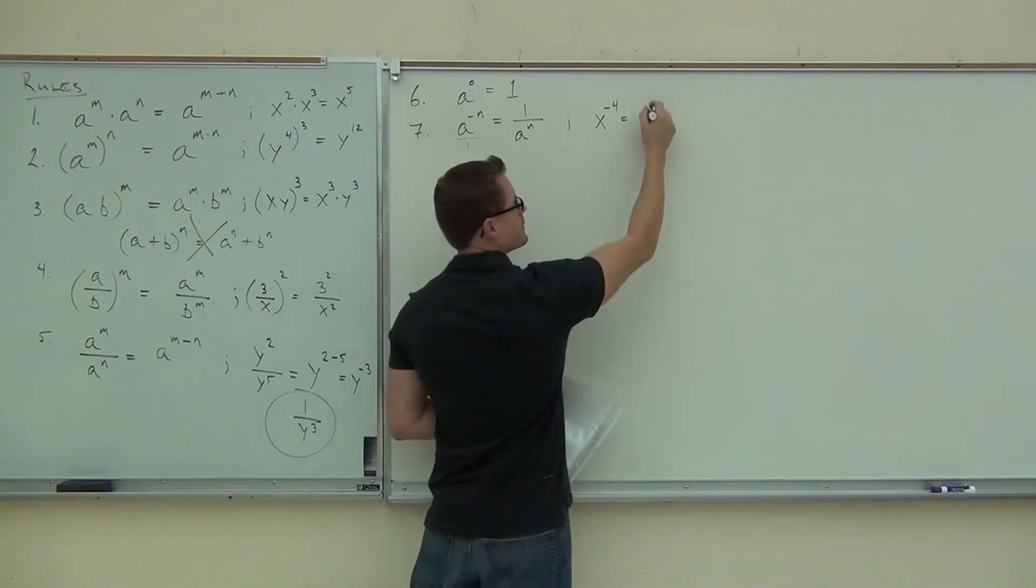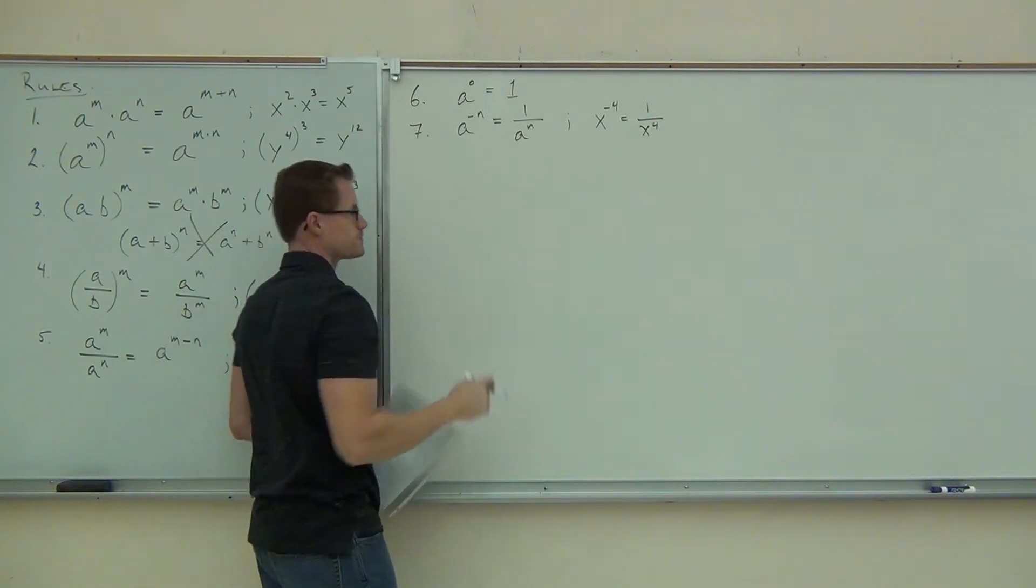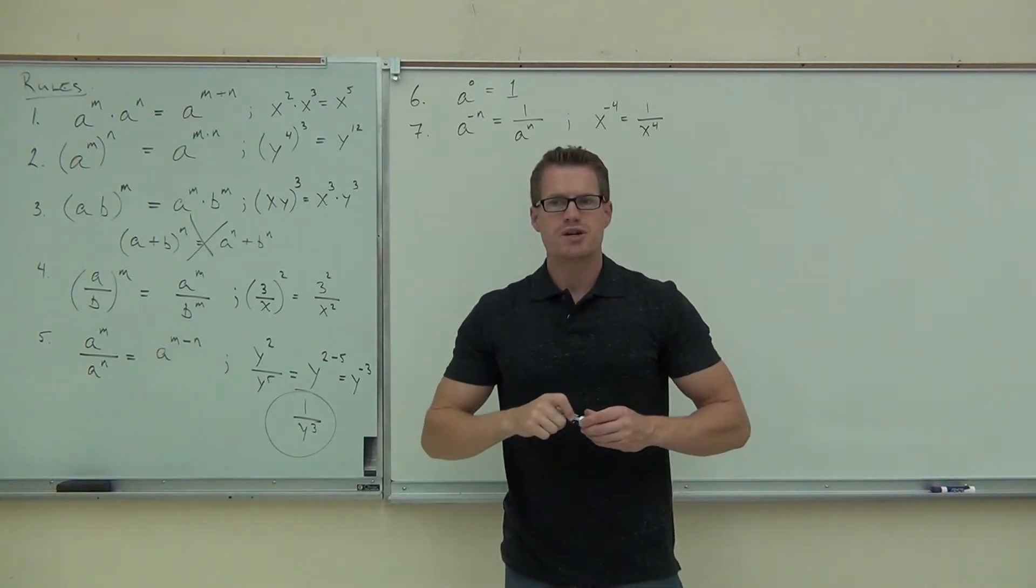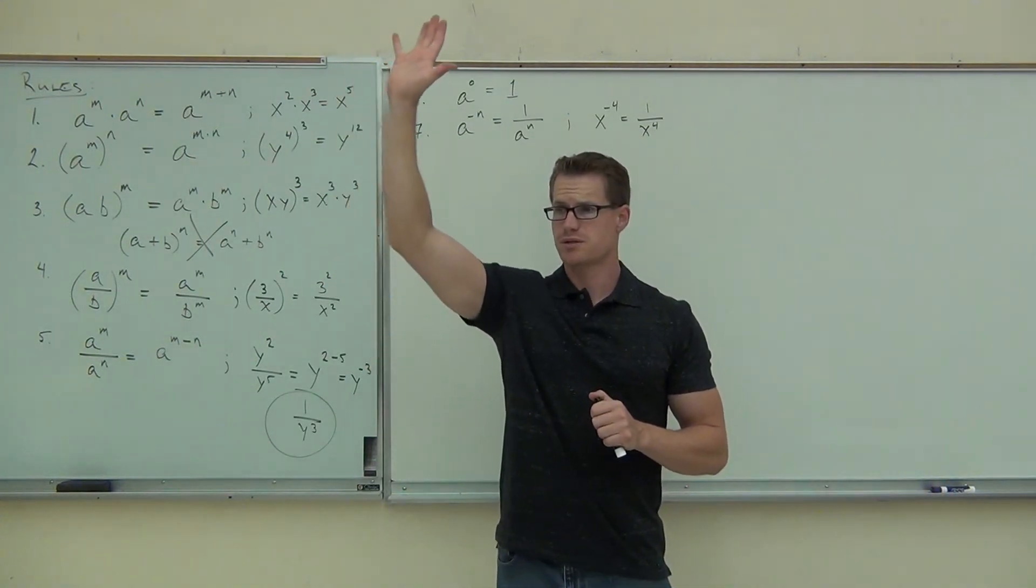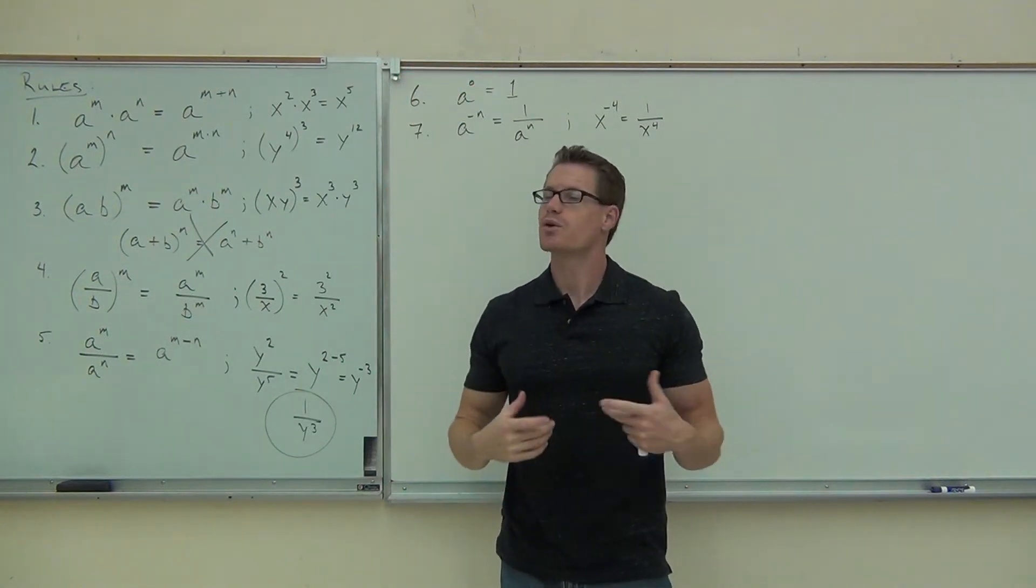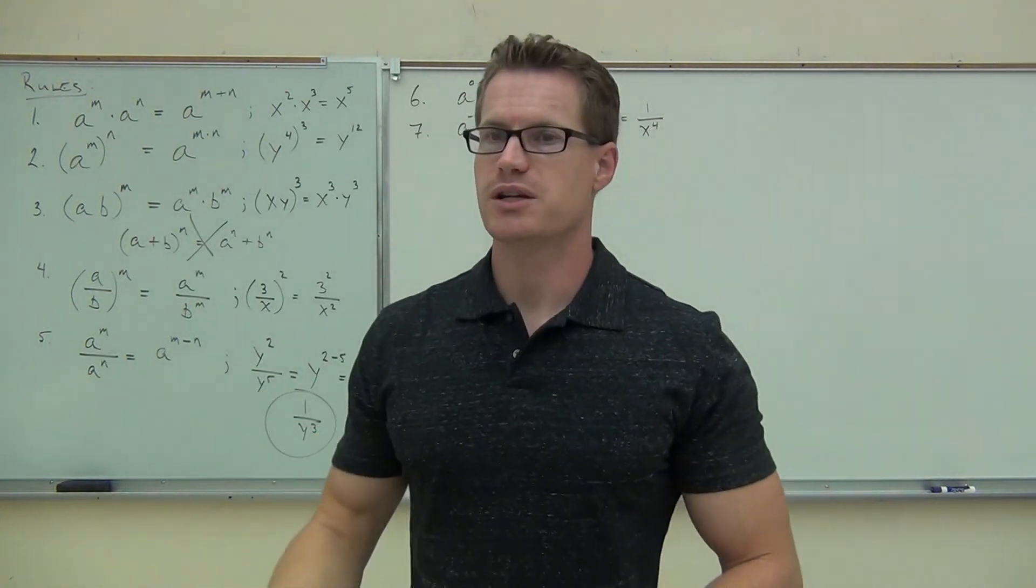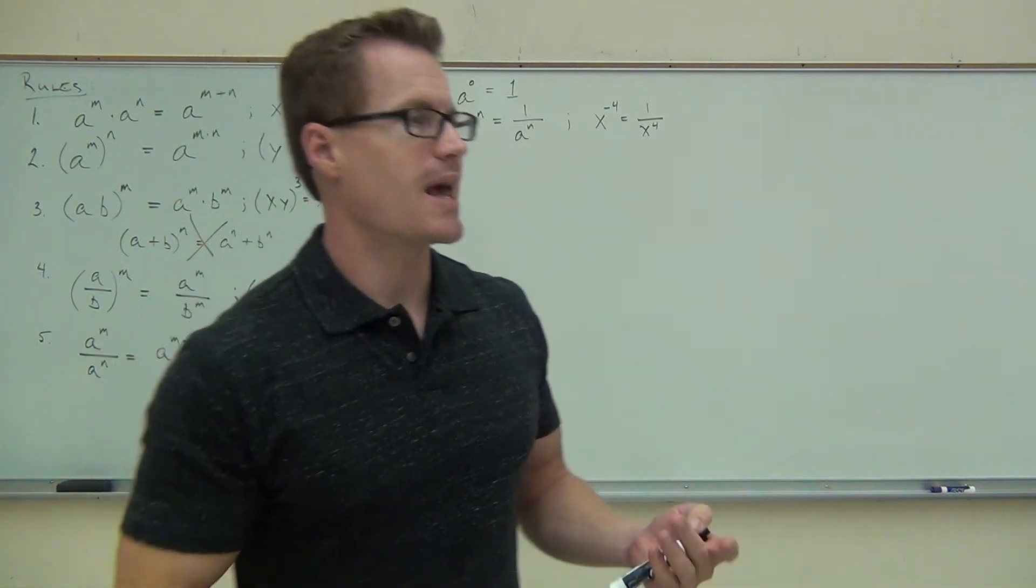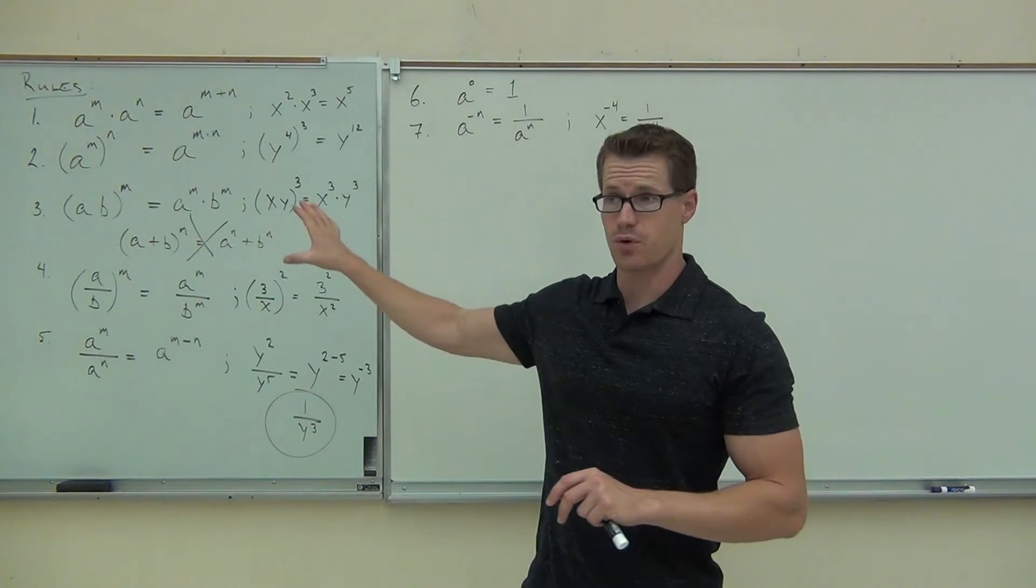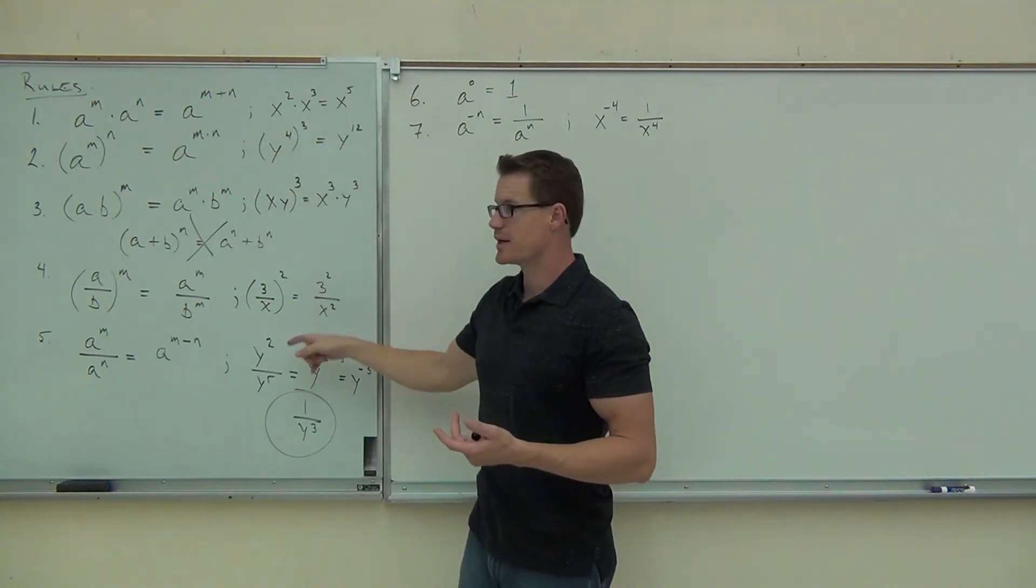X to the negative 4, we can write that as 1 over X to the 4. Would you raise your hand if you feel okay with these rules? They should be a refresher for you, right? Now what we're going to do is take these rules that we just reviewed and apply them to our rational exponents.